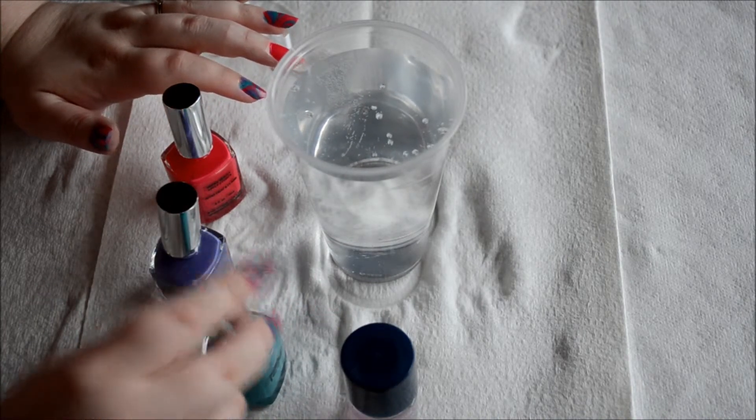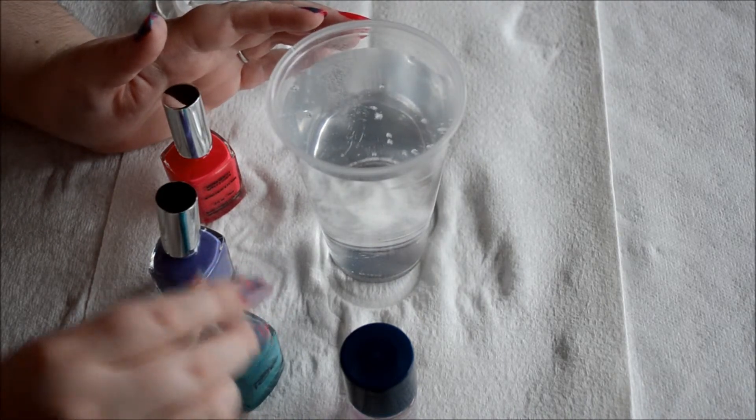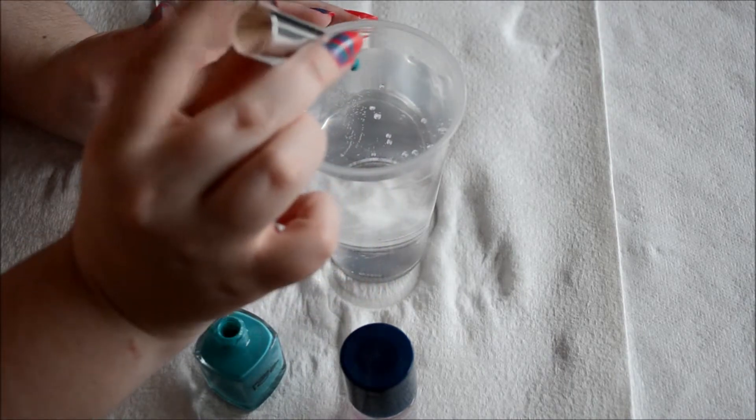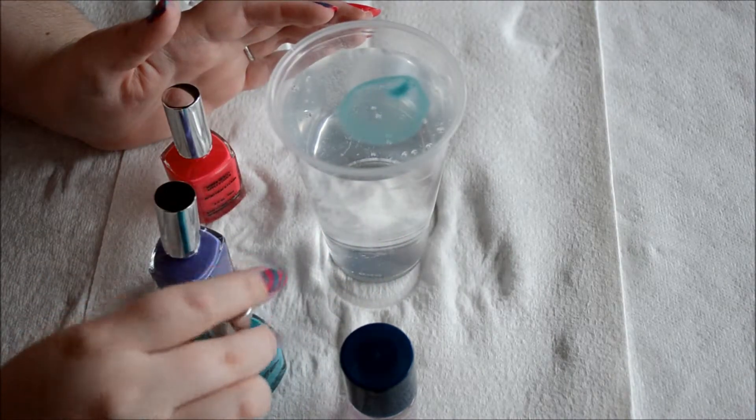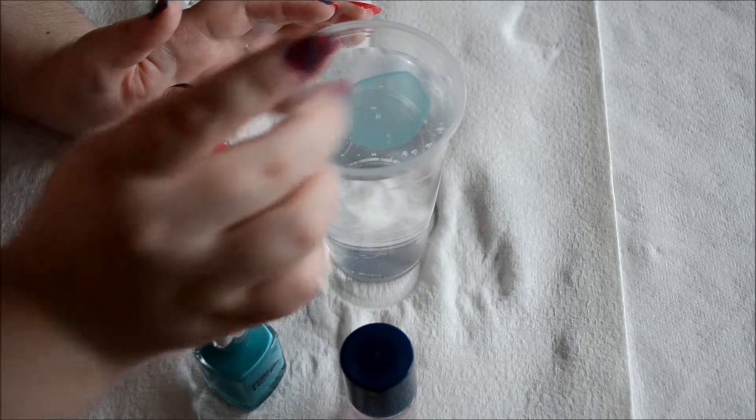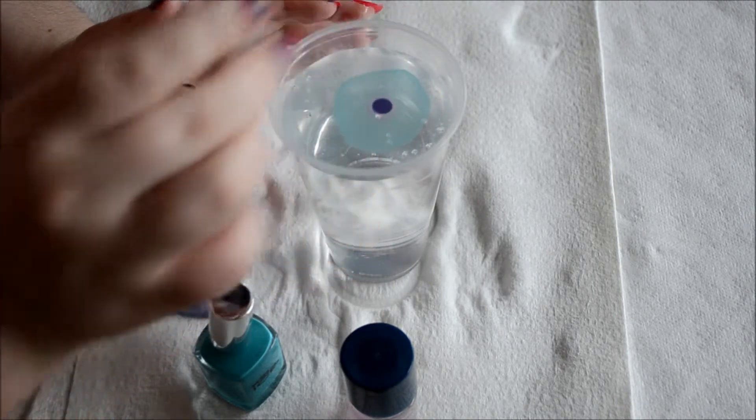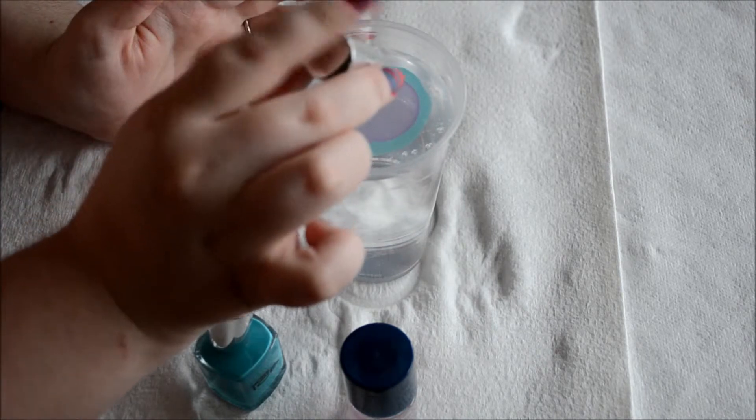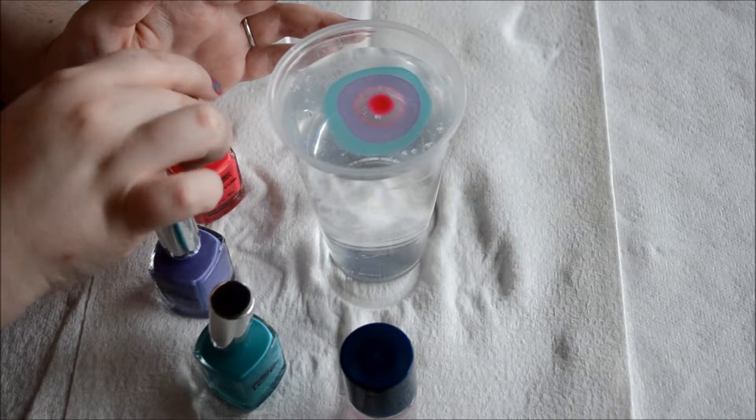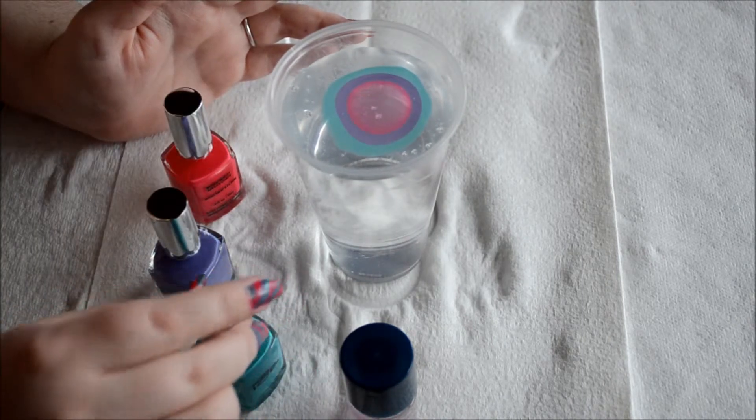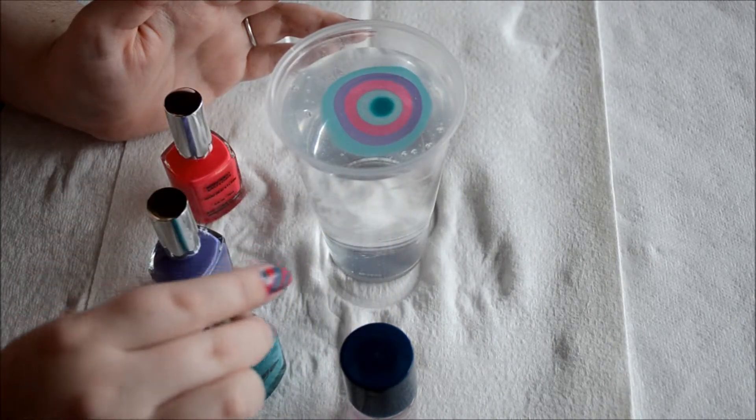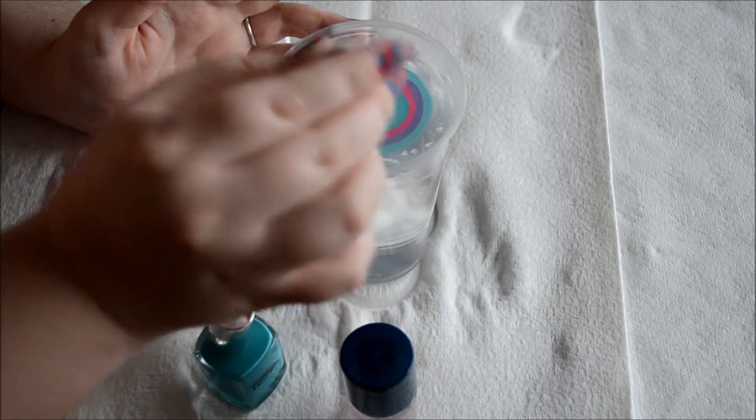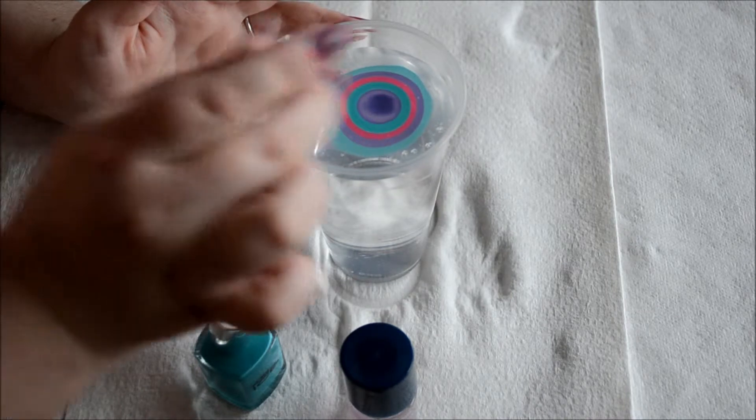And what you're going to do is you're going to want to dip the brush down in there a lot to where you're able to take a drop and drop it into the water. And you'll do this with each one, putting the drop in the middle of the drop you put in before. So you'll just keep doing this until you feel you've got enough nail polish in there to make a design.